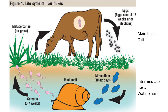Looking at the liver fluke life cycle, the telltale feature is its shape and that it involves two hosts: a cow and a mud snail. This parasite survives within water, which is why it must pass through the mud snail. As soon as you see a snail alongside a cow or sheep in a life cycle diagram, think liver fluke. Eggs are laid inside the host, passed out in feces, and end up near a river, lake, or puddle.